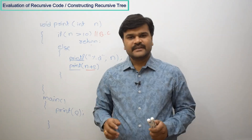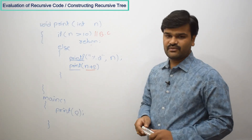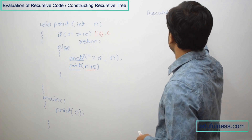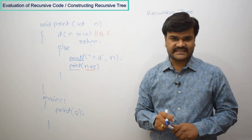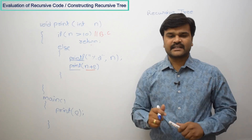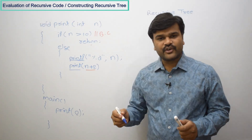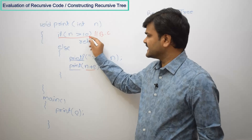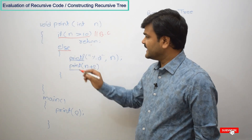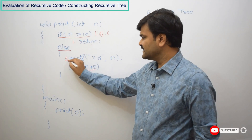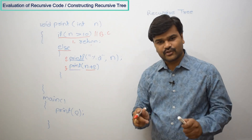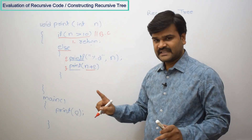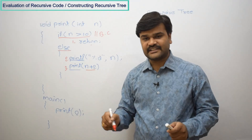Here the initial value is 0, and we are going to construct a recursive tree for this recursive function. If you are able to construct a recursive tree for every recursive function, then you are going to get an exact answer. Before constructing the tree, come to your recursive function and leave the condition statements. Then from top to bottom, assign sequence numbers to every statement: 1, 2, 3. Conclude that statement 1 executes when the condition is true, and statements 2 and 3 execute sequentially when the condition is false.